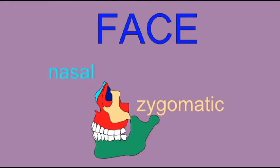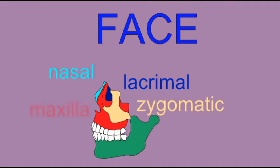And then obviously the large mandible, which holds all of the teeth of the lower jaw. It is the articulation between the temporal bone and the mandible — the TMJ — which allows for the movement of the lower jaw during eating.